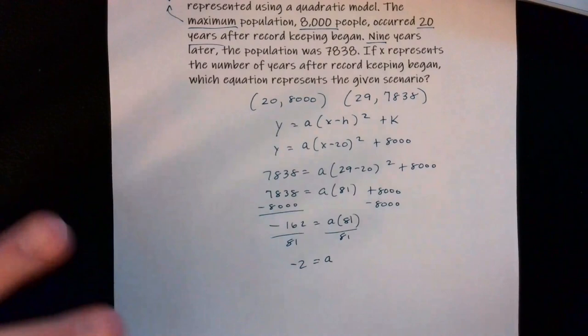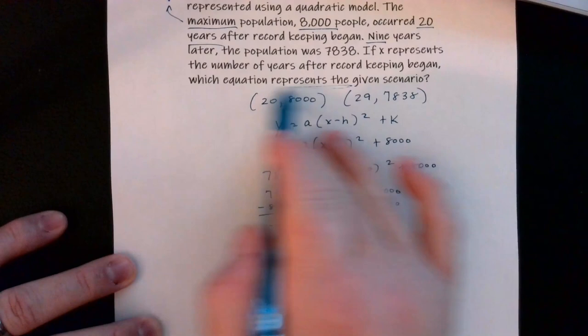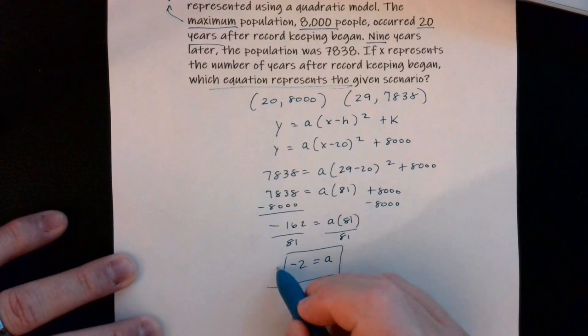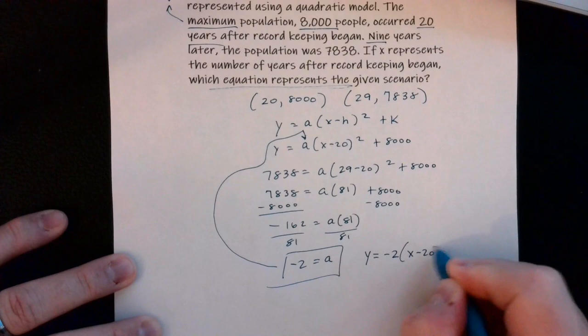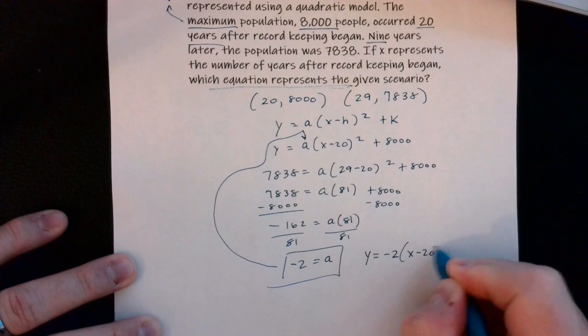Since we're asked which equation represents the scenario, we're not done until we write the full model: y equals negative 2 times (x minus 20) squared plus 8000. I hope this helps with the assignment — if not, make an appointment for a help session and we'll go back through some things.